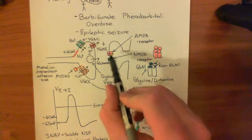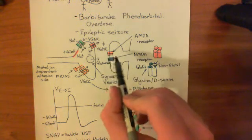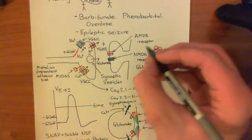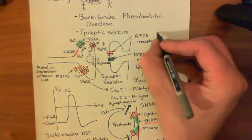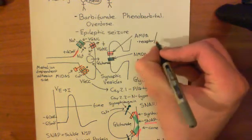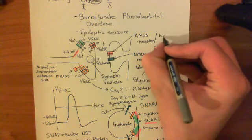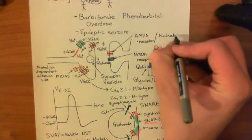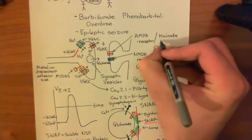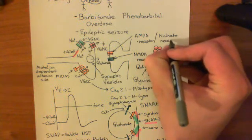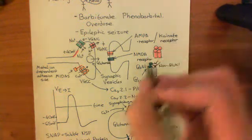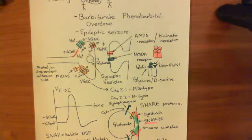Both of these receptors are going to open. In some portions of the brain, rather than having the AMPA receptor, you will instead have the kainate receptor, which is pretty much very similar to the AMPA receptor — it's got four subunits, all of which bind glutamate, and it conducts monovalent cations.